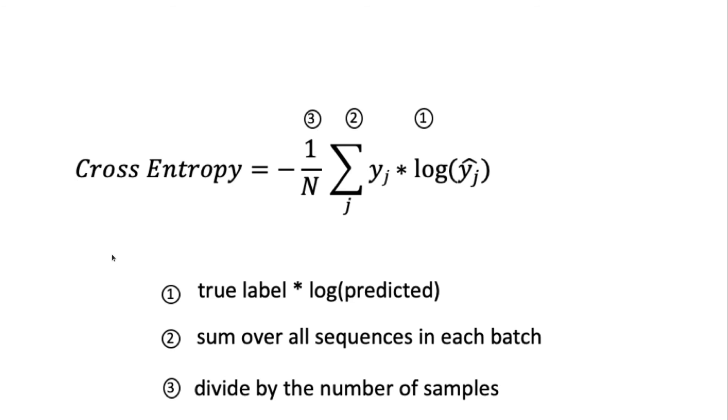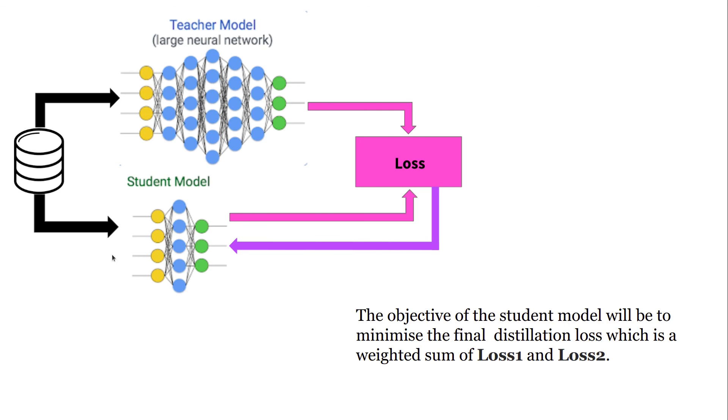So this is the main objective. The objective of the student model will be to minimize the final distillation loss, which is the weighted sum of loss 1 and loss 2. And this way, you train this student model under the guidance of the teacher. Why did I say under the guidance of the teacher? Because the teacher is also contributing something to the loss. It's contributing rich probabilities which actually capture the data distributions of the input dataset. And then that's fed into the student model. I hope you got a basic understanding of how this works.